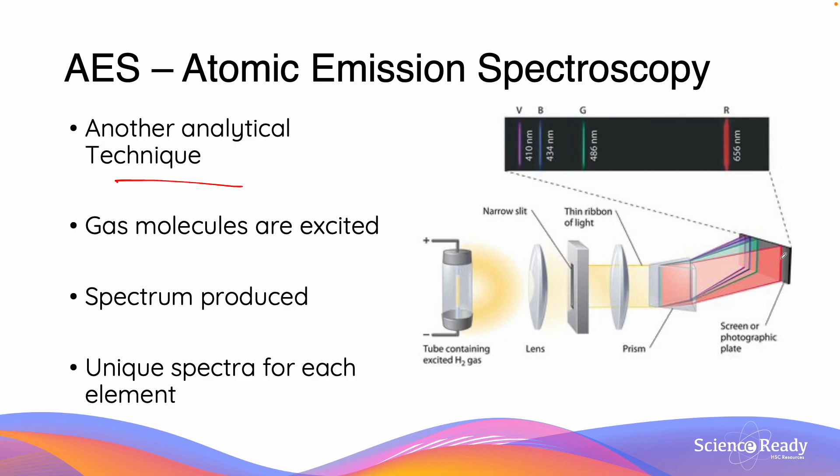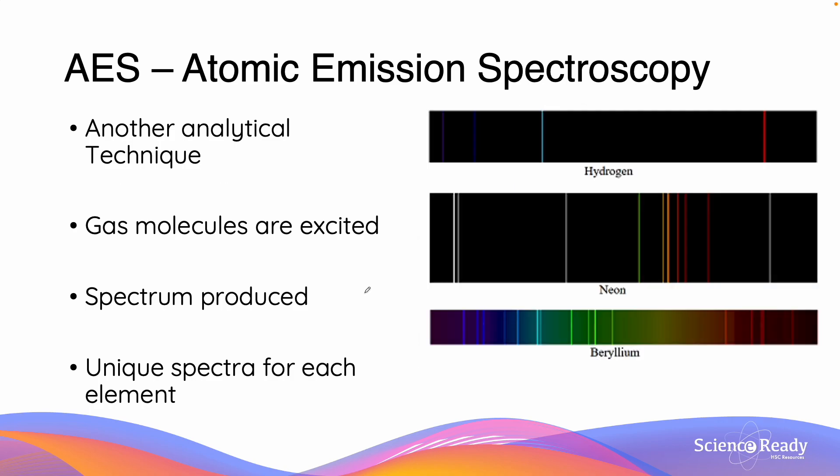These slits can then be shown onto a dark background in order for us to produce these spectral lines which we can see here. Here are the different spectra which are produced by hydrogen, neon, and beryllium. Notice that the spectra are unique for each element.